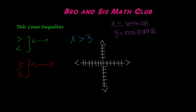So remember this: when you're graphing a linear inequality, if you have the symbols greater than and less than, your line will be dashed or dotted. And if you have greater than or equal to, or less than or equal to, your line will be solid.